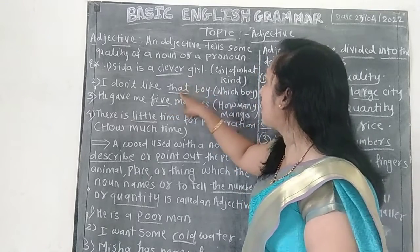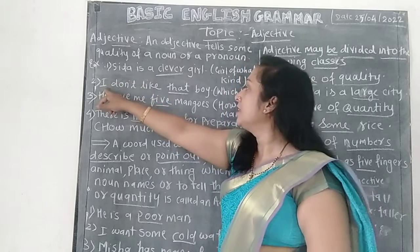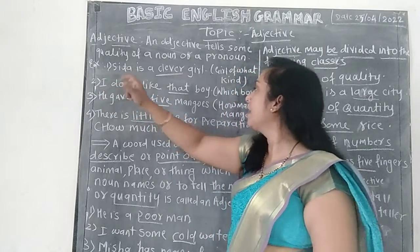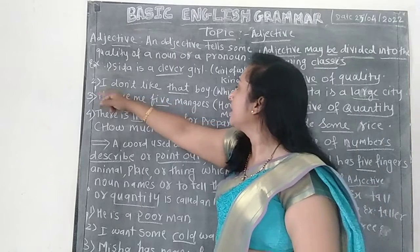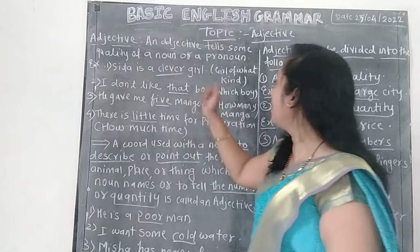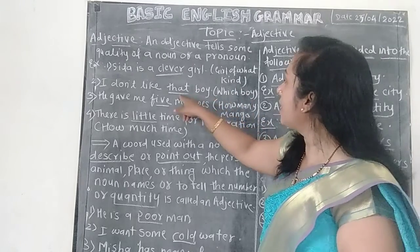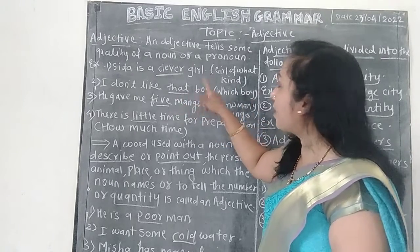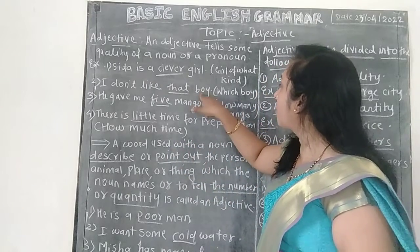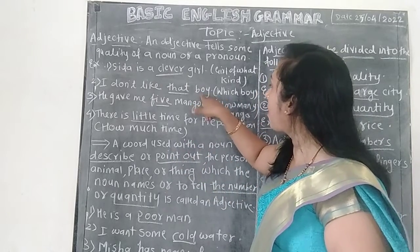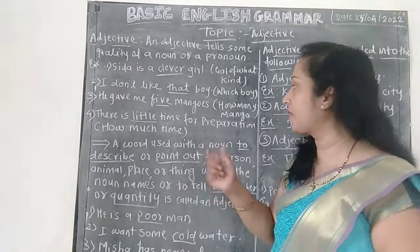The adjective tells the quality of a noun. In the sentence 'I don't like that boy,' 'I' is a pronoun and 'boy' is the noun. 'That' tells which boy — that boy. So 'that' gives information about the noun 'boy,' indicating which specific boy is meant.